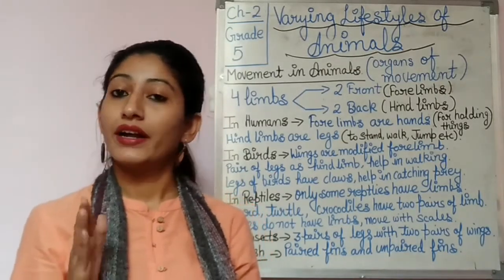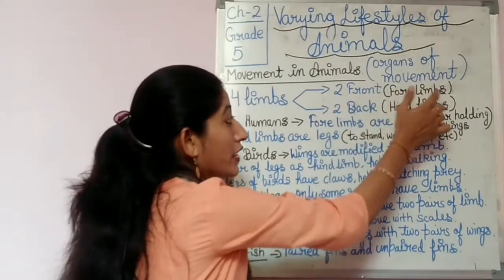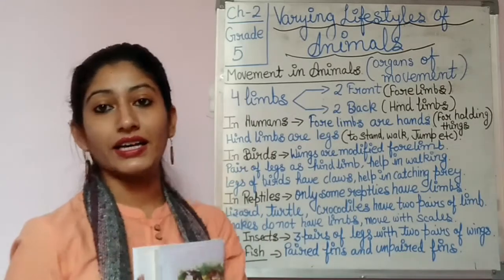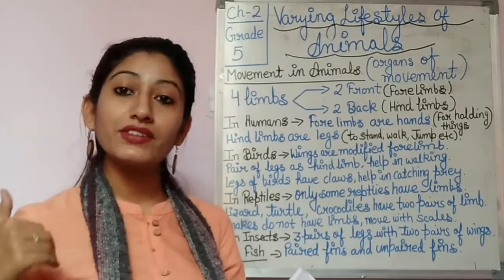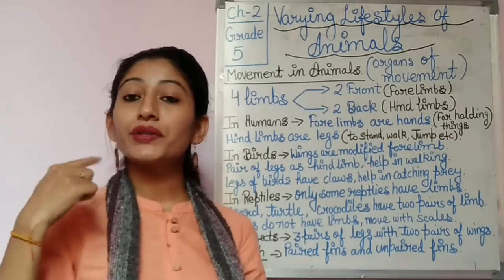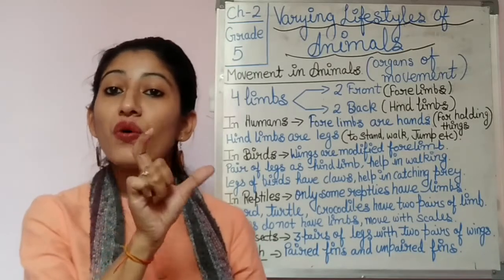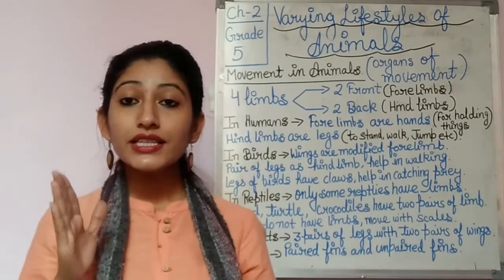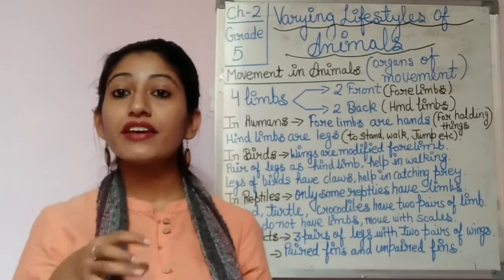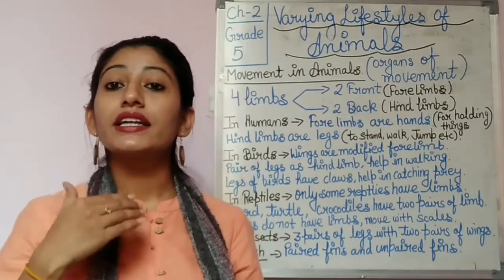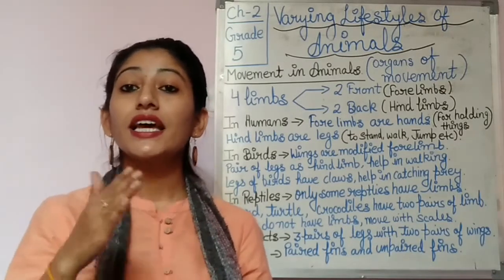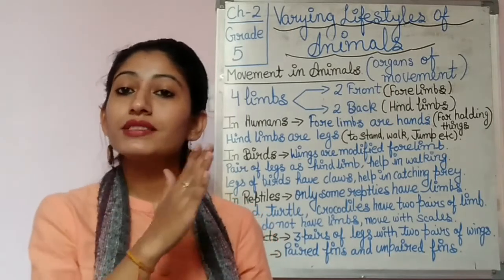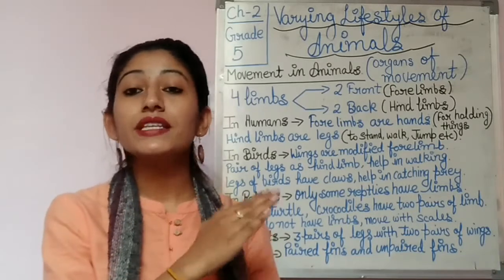To summarize: forelimbs are the front limbs, which you can think of as hands, and hindlimbs are the back limbs, which you can think of as legs. So whenever I say forelimbs, think of hands, and whenever I say hindlimbs, think of legs.